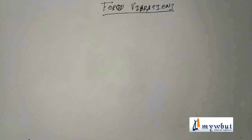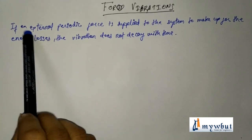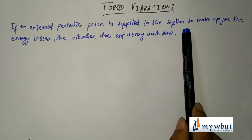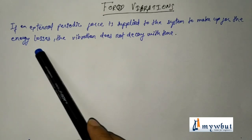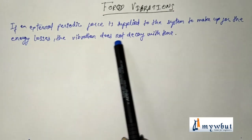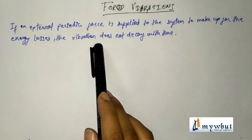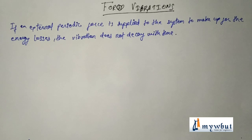Here is the definition of forced vibration: if an external periodic force is applied to the system to make up for the energy losses, then the vibration of this type is known as forced vibration. These vibrations do not decay with time. Now let us see the differential form of the equation for forced vibration and solve it.